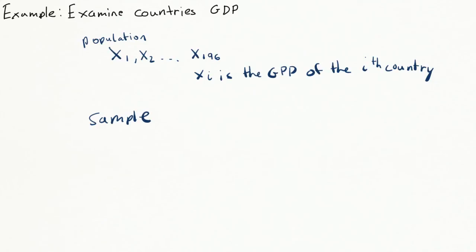The sample would be X1, X2, all the way through X50, where Xi is the GDP of the ith sampled country.